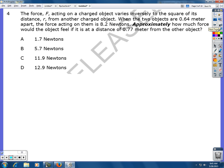Number 4. The force acting on a charged object varies inversely. So there's our keyword, inversely. That means we're going to be using our formula here. To the square of its distance r from another charged object. So I'm going to stop right there. So our two variables are going to be force and distance. Force and distance.